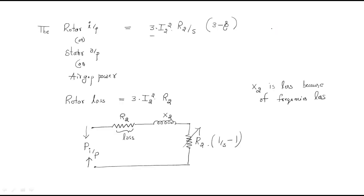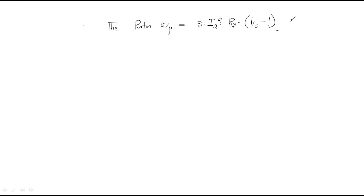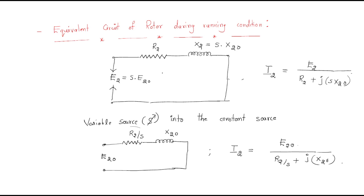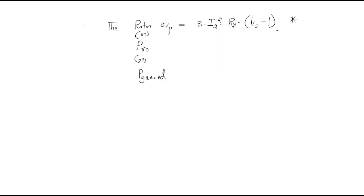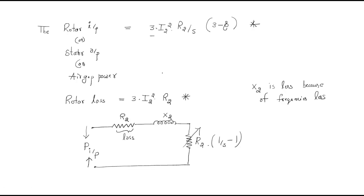So we can find out three things: rotor input, rotor losses, and rotor output. When the input is given to the rotor, some losses occur, and then the rotor generates output power. These are the details about the equivalent circuit of the rotor during running condition. I hope all of you understood this session. We will continue this topic in the next session. Thank you.